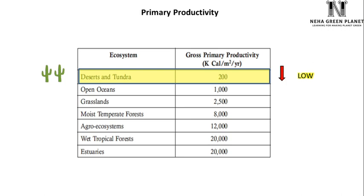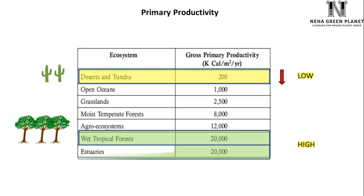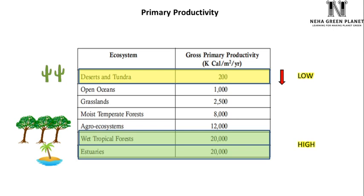As we move from desert to forest or estuaries, productivity increases. Highest productivity is observed in wet tropical forests and estuaries. Wet tropical forests have very high numbers of trees. Similarly, estuaries have very high primary productivity because they are places where fresh water of rivers meets ocean water, resulting in a lot of nutrient mixing. As a result, coastal vegetation is very dense and thick with high chlorophyll content. Primary productivity thus varies from ecosystem to ecosystem and depends on parameters like chlorophyll, types of trees, and local conditions.